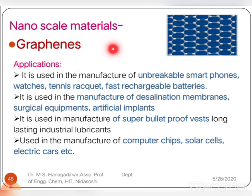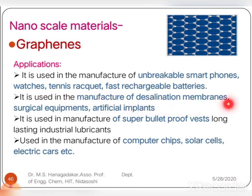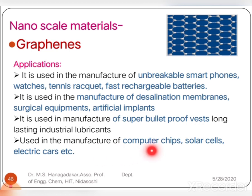Applications of graphene include its use in manufacturing unbreakable smartphones, watches, and tennis rackets. It is used in fast rechargeable batteries as electrode material, and in the manufacturing of desalination membranes in reverse osmosis. Graphene is also used in surgical equipment and artificial implants, in super bulletproof vests, long-lasting industrial lubricants, computer chips, solar cells, and electric cars.